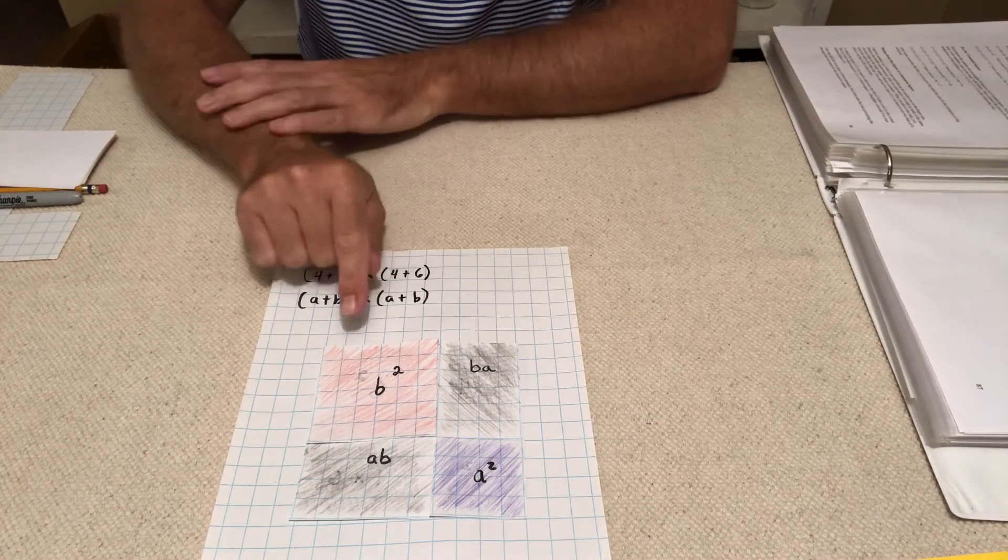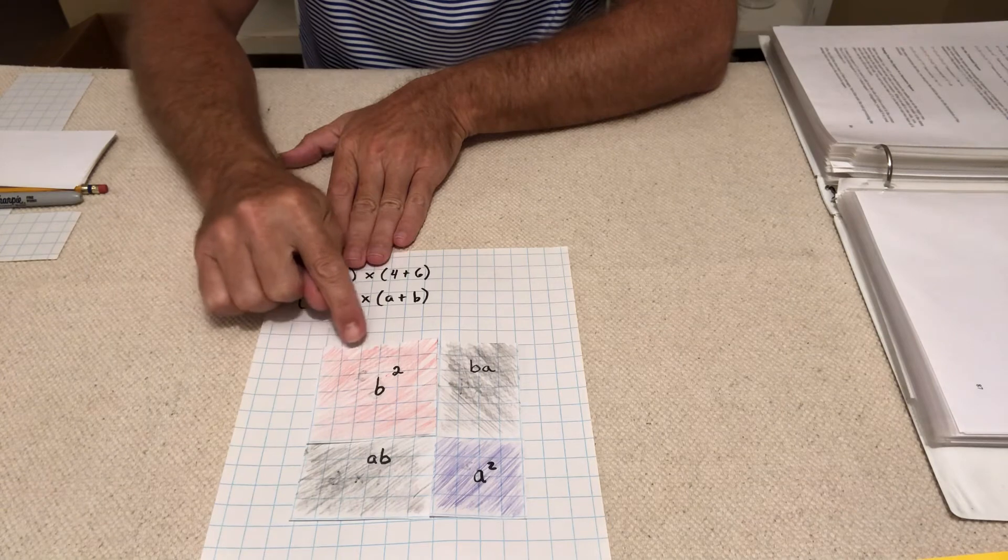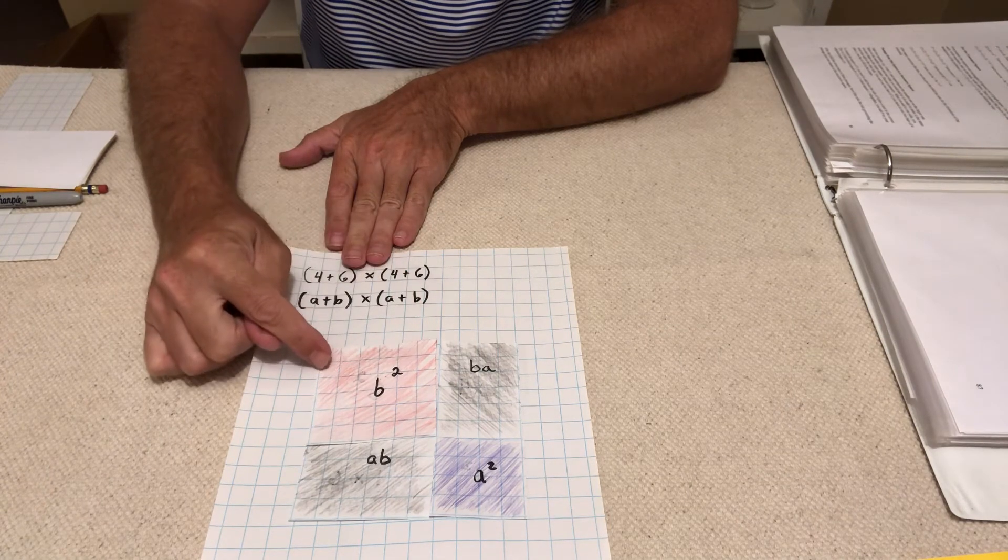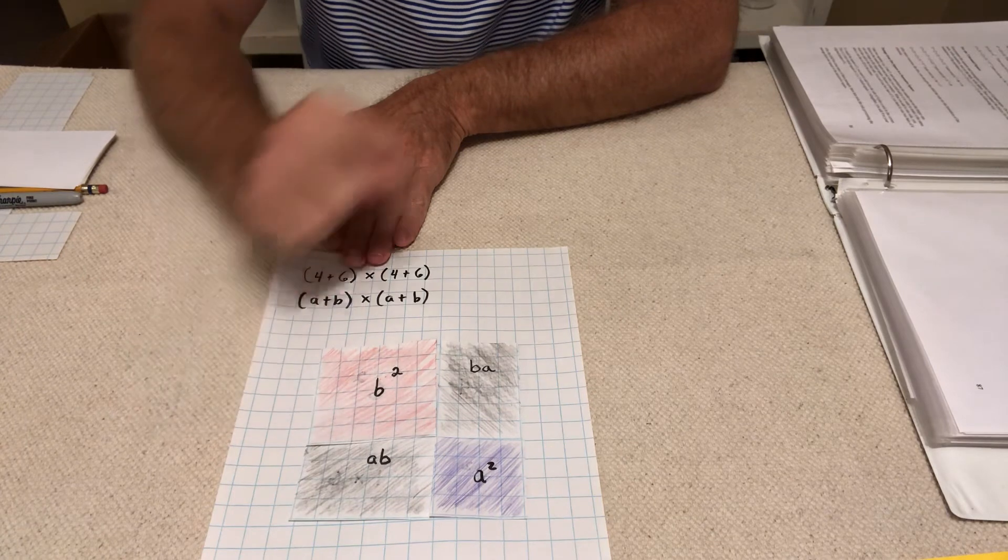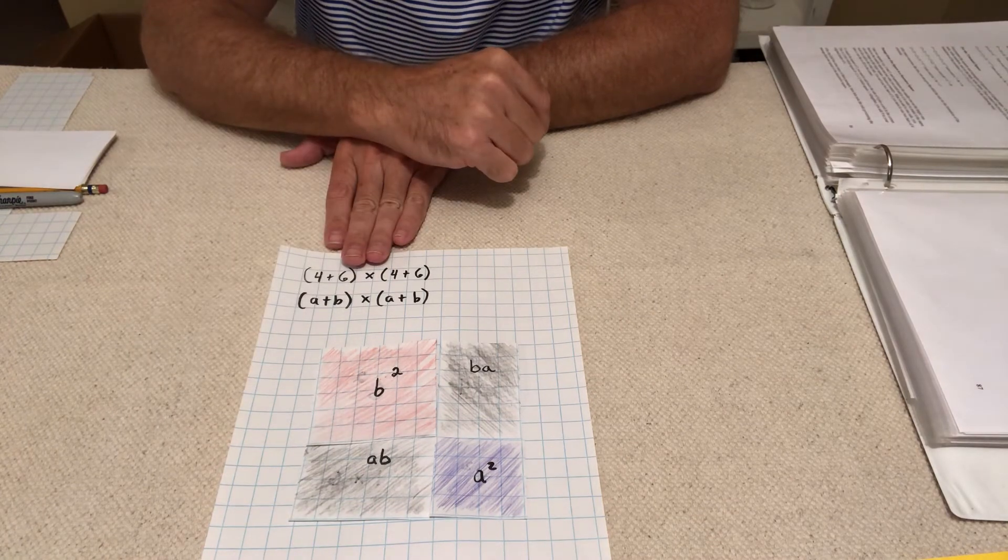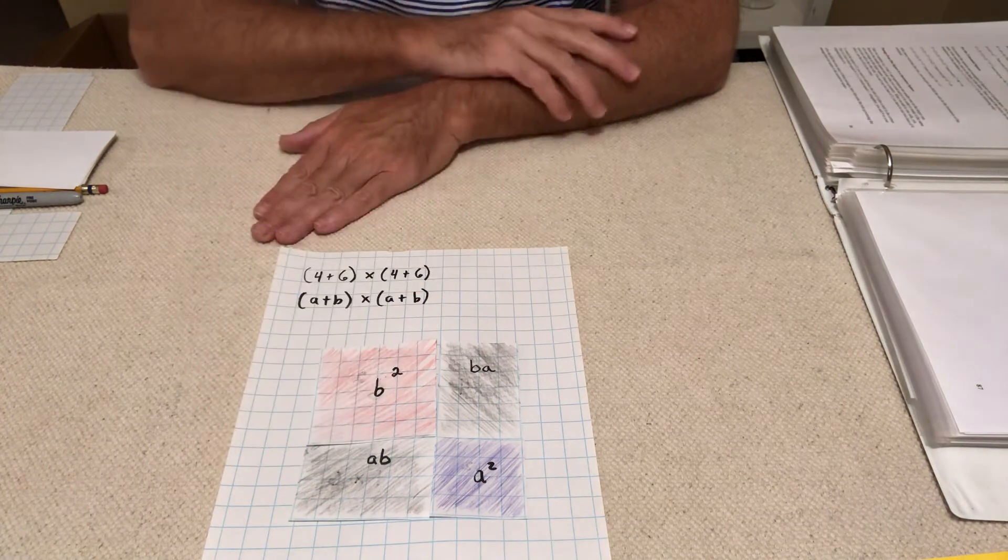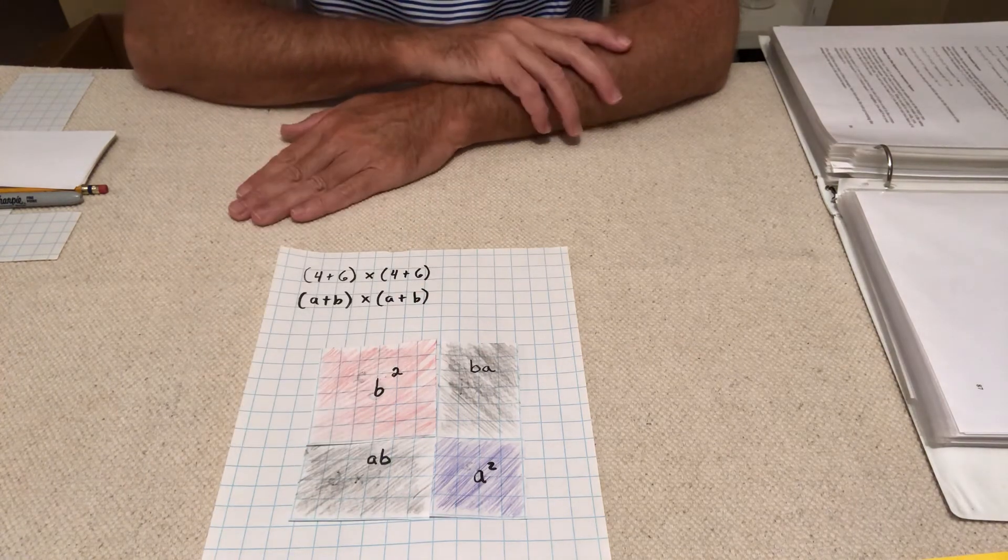You could count these out if you wanted to: 1, 2, 3, 4, 5, 6 squares by 1, 2, 3, 4, 5, 6 squares. Right? So again, the B stands for the 6, the A stands for the 4. And all I've done is substituted them.